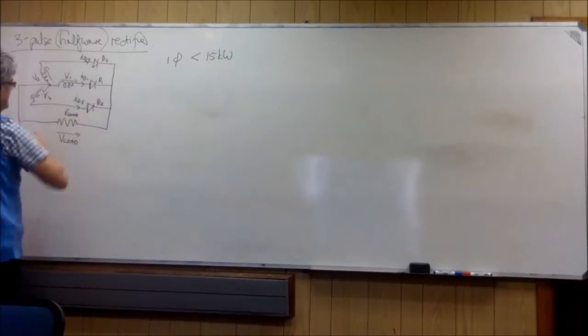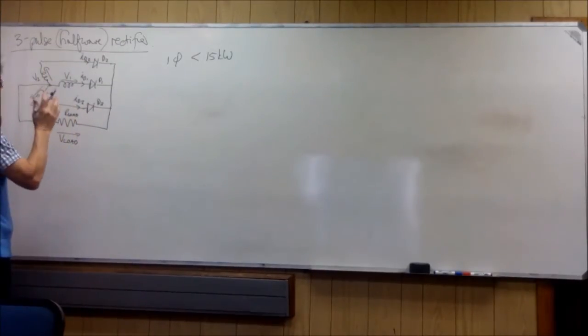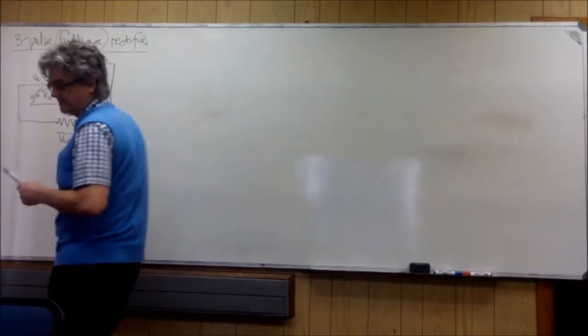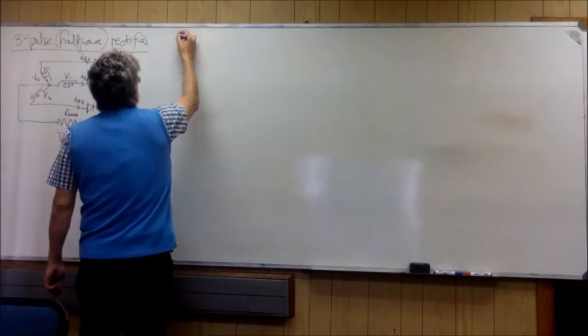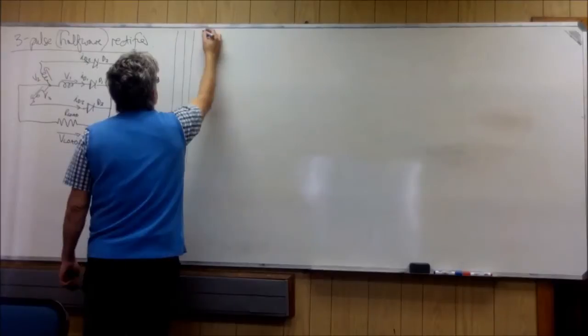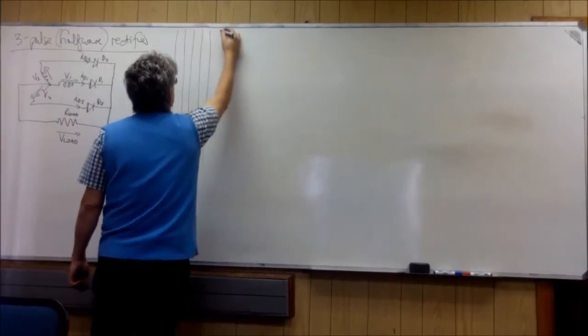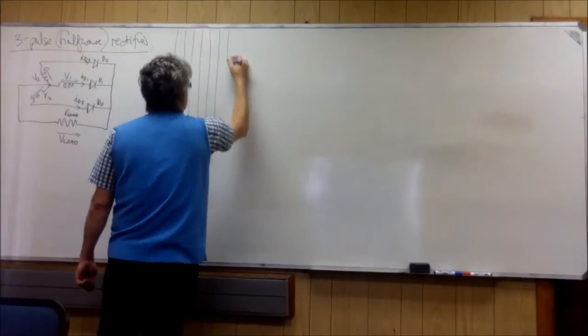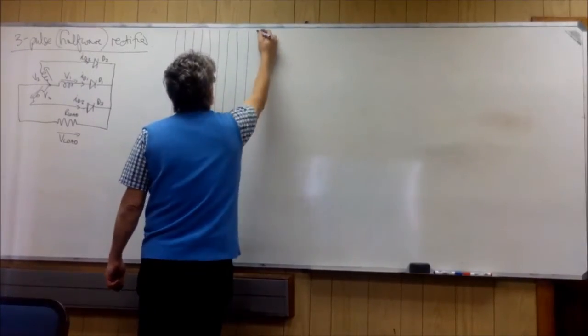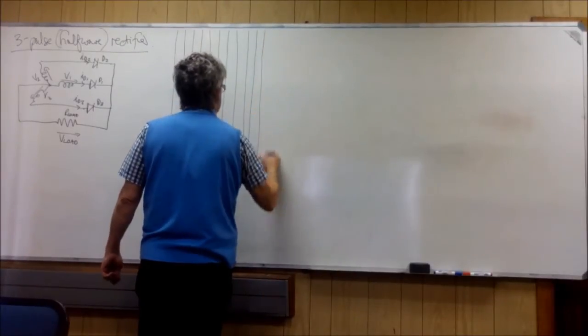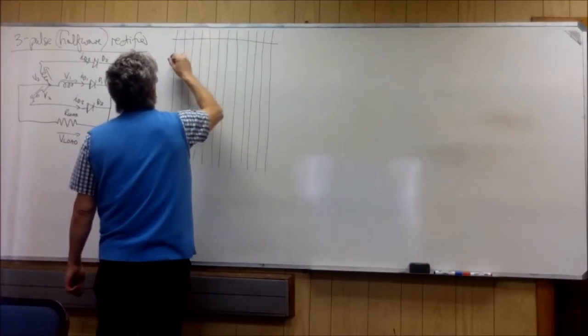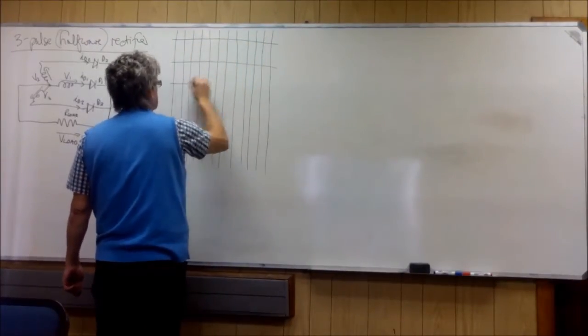So here is our simple 3-phase rectifier, half-wave. So once more, you have to draw your 13 vertical lines equally spaced, and then your 5 horizontal lines equally spaced.